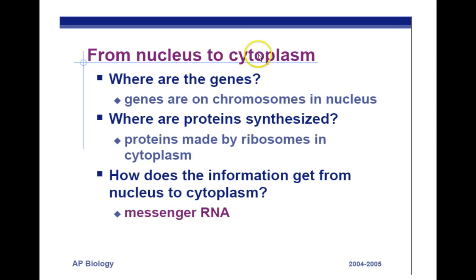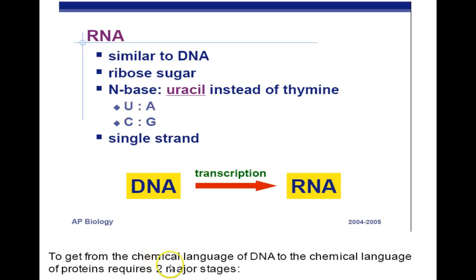Now we're going to move from the nucleus to the cytoplasm — getting information from point A to point B. The genes are located on chromosomes, which are made of DNA and protein, in the nucleus. The proteins are made in the cytoplasm. So how does the information get from the nucleus to the cytoplasm? We have to send a messenger, and that messenger is RNA. RNA is similar to DNA — it has three of the four same nucleotides: adenine, guanine, and cytosine. It has a different sugar called ribose instead of deoxyribose, and one different nucleotide: uracil instead of thymine. If you ever see uracil, you know you're dealing with RNA; if you ever see thymine, you know you're dealing with DNA.